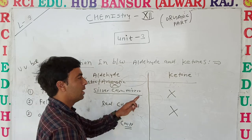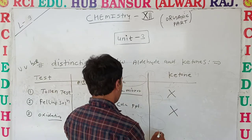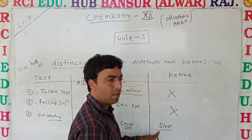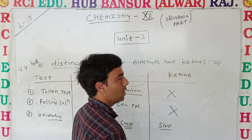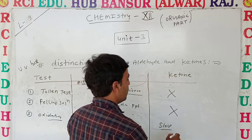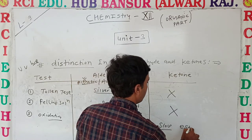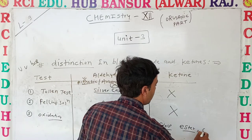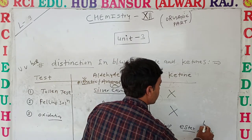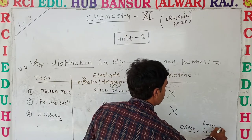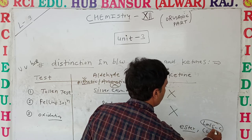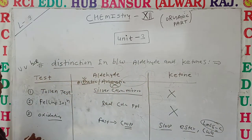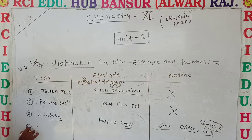Ketones oxidize very slowly. Upon oxidation, carboxylic acid is formed. A carboxyl group with fewer carbons is produced — the substrate is broken down. This is the oxidation to form the acid.